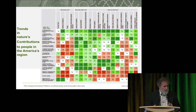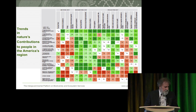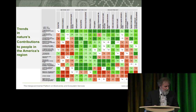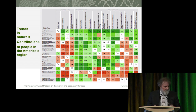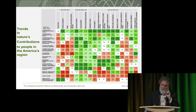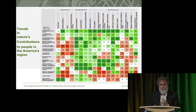Looking at nature's contributions for people across different ecosystems and contribution types, many of the arrows are at best horizontal — things are somewhat stable — but many are going down, except for agriculture at the bottom, where food and fibre production is going up. That trend of continually demanding more food and the way we do agriculture can be sustainable — there is no question agriculture can be sustainable — but not the way we do it today.